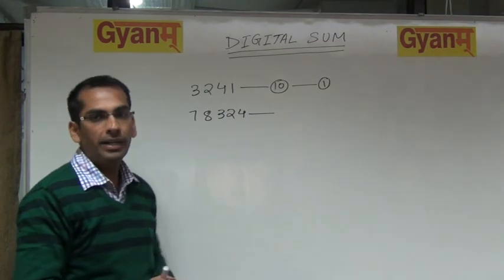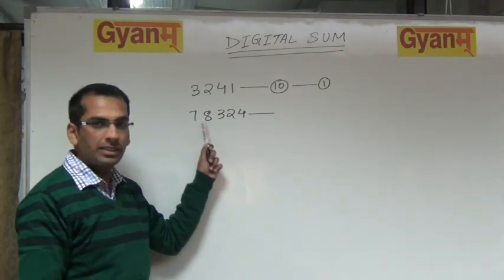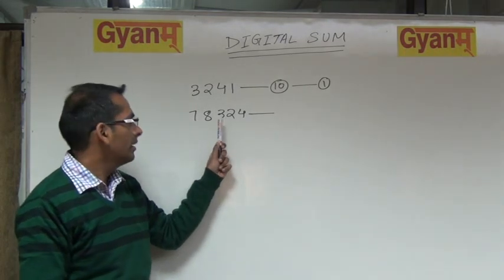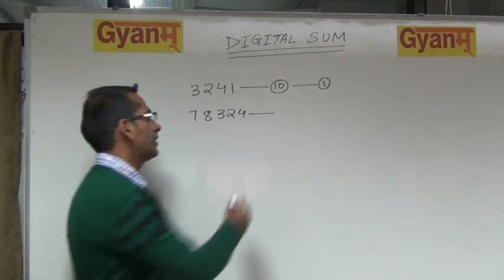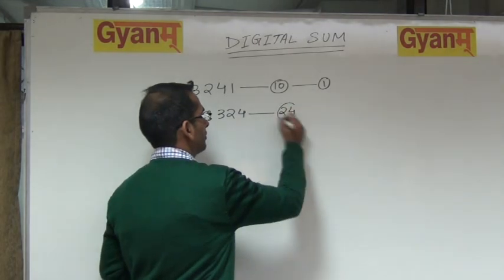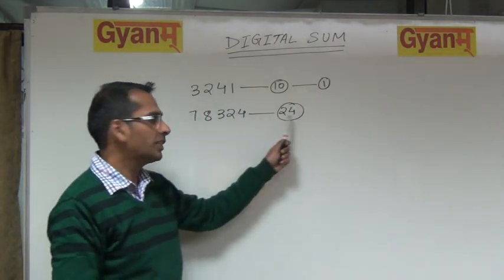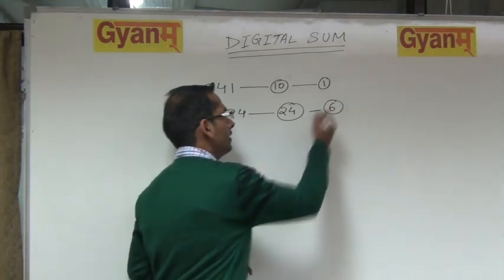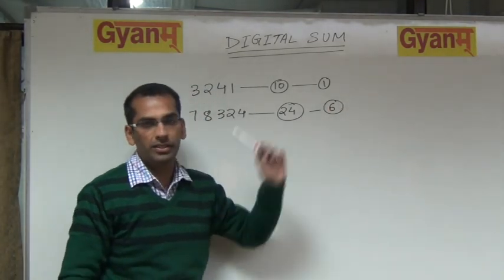Let us find the digital sum of this number now. What is 7 plus 8? 15. 15 plus 3? 18. 18 plus 2? 20. 20 plus 4? 24. Let us find the digital sum: 2 plus 4? 6. So we can say the digital sum of this number is 6.